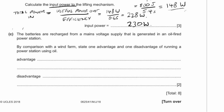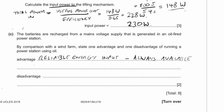Part C: the batteries are recharged from mains voltage generated in an oil-fired power station. By comparison with a wind farm, state one advantage and one disadvantage of running a power station using oil. A major advantage is that it's a reliable energy source — it's always available. One disadvantage is that it creates CO2 contributing to global warming, and another is that oil is not renewable.